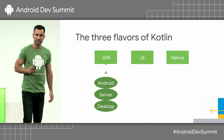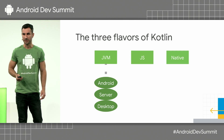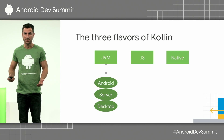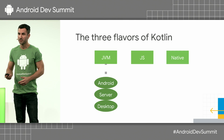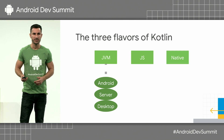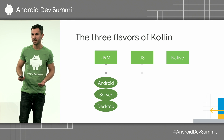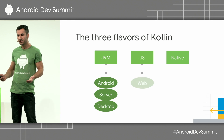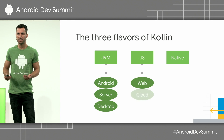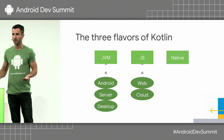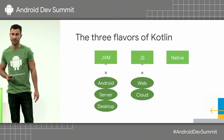Now, there are two more flavors of Kotlin, actually, or compilation targets. The first one is Kotlin.js for running JavaScript in a web browser environment, or even something like Cloud Functions or Node.js.